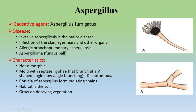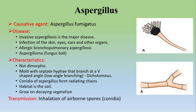Septate means the hyphae are divided by septa — dichotomous branching. The conidia of Aspergillus fumigatus are arranged in radiating chains from the conidiophore, as visible in the picture. Habitat is soil; it grows in decaying matter. Transmission occurs by inhalation of airborne conidia (asexual spores). To summarize the characteristics: Aspergillus is not dimorphic, only hyphal form, with septate hyphae branching in a V-shape, and conidia arranged in radiating chains.